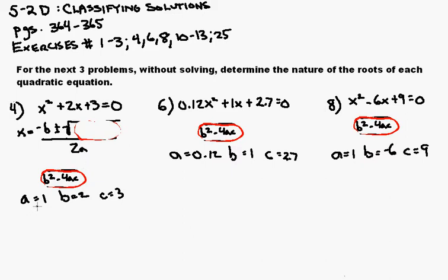At this point, let's calculate b squared minus 4ac. I have 2 squared minus 4 times 1 times 3. 2 squared is 4, and 4 times 1 times 3 is 12, so I have 4 minus 12, which is negative 8.